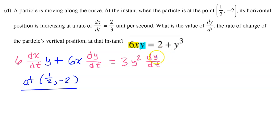Ultimately, we need to solve for dy/dt, but we know the value of everything else in this equation. Let's substitute in 1/2 for x, -2 for y, and 2/3 for dx/dt. So, label your work like this. At the point (1/2, -2), we get 6 times dx/dt, so that's 2/3, and then times y, which is -2, plus 6x, and the x is 1/2, times dy/dt. This is what we are trying to solve for.